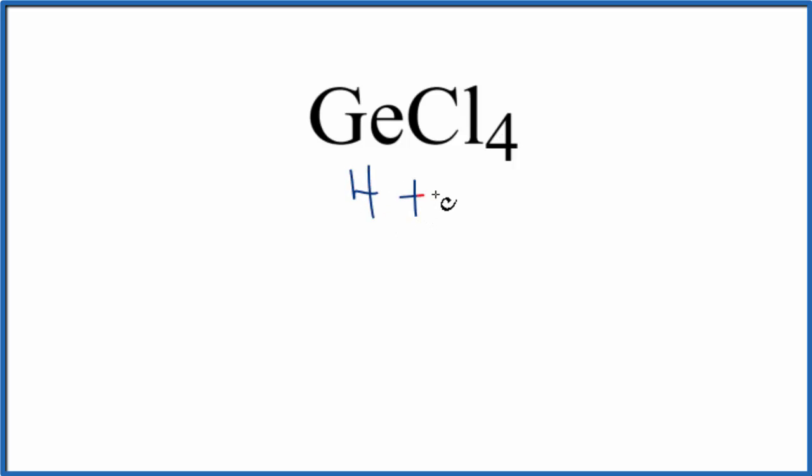Four valence electrons, chlorine, group 17, sometimes called 7A. Seven valence electrons, we have four chlorine atoms. So four plus 28, 32 total valence electrons for the GeCl4 Lewis structure.